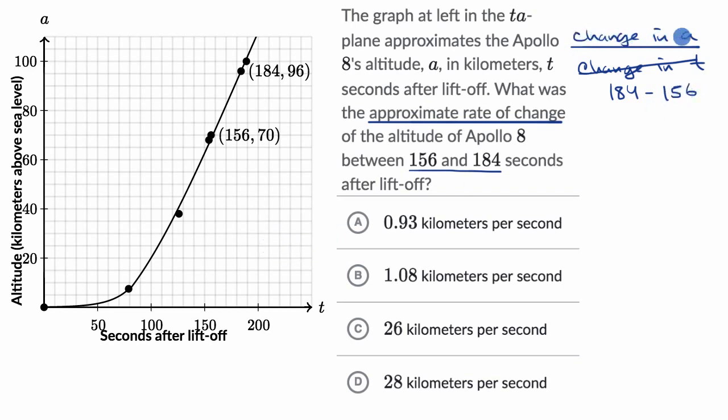And then what is our change in altitude over that same time period? So when we go from 156 seconds to 184 seconds, our altitude goes from 70 to 96. So Apollo 8 has gone up by 26 kilometers.